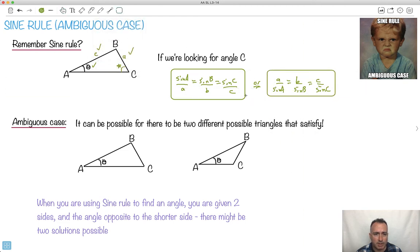So what's the big deal? Why is it an ambiguous case? Well, it turns out if you're using sine rule to find an angle, and you're given two sides, a short one and a long one, and you know the angle that's opposite to the shorter side, it's possible to have two different solutions for angle C.